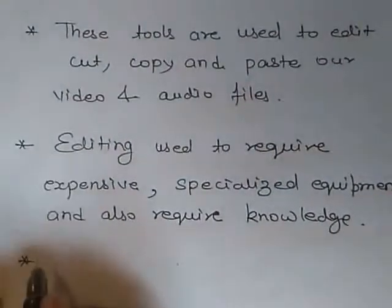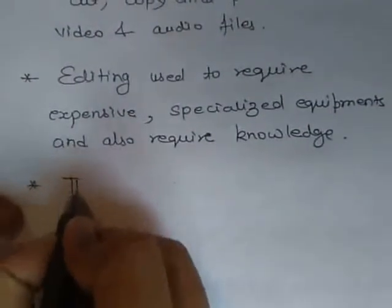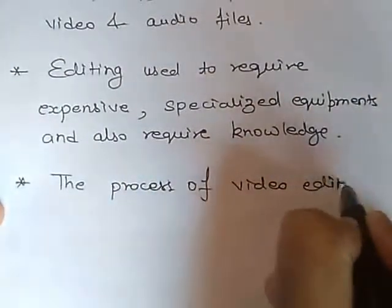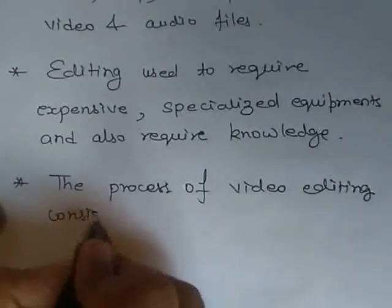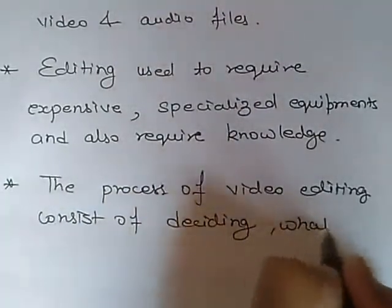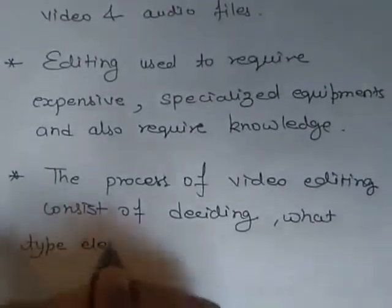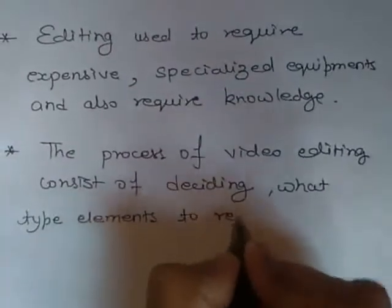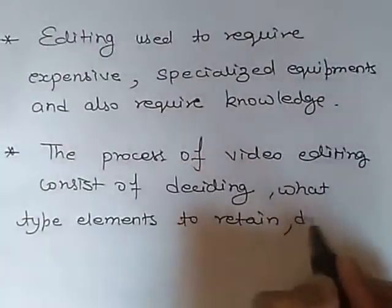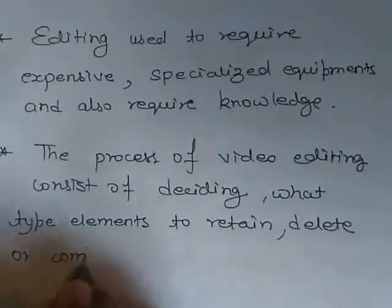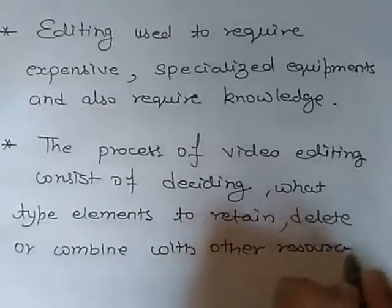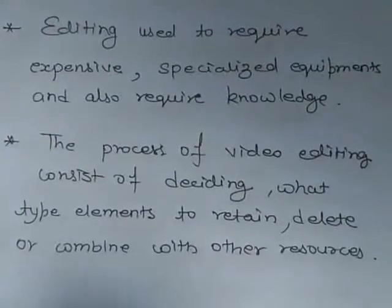Now the process of video editing consists of deciding what type of element to retain — means what type of element we have to put in our multimedia application — and what type of element we have to delete or combine with other resources. For example, we can say the mixing of audio and video files.